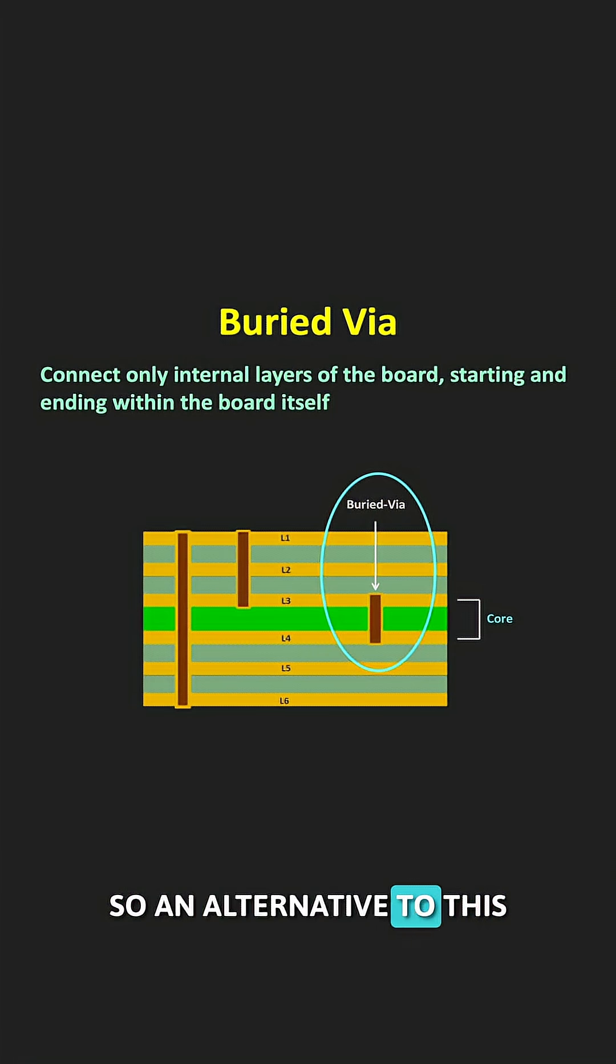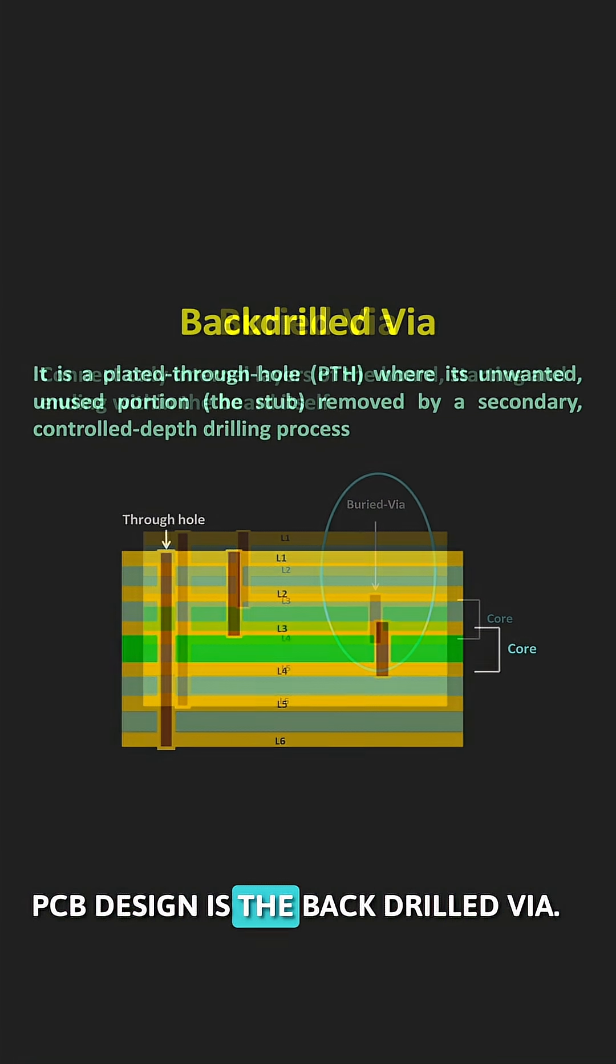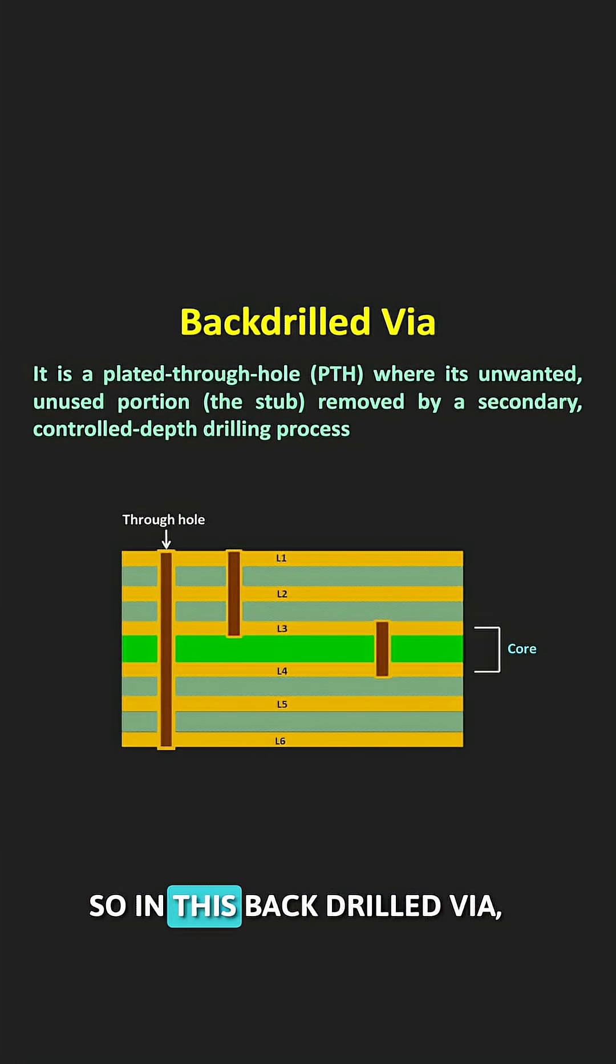An alternative in high speed PCB design is the back drilled Via. In this back drilled Via, instead of using complex blind or buried Vias, first a standard through hole Via is drilled.